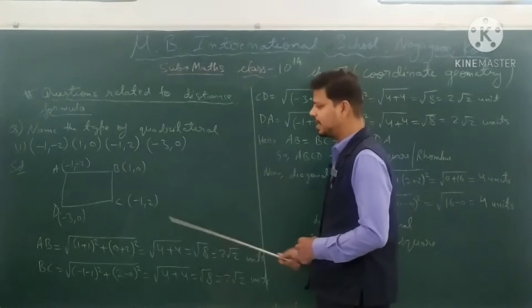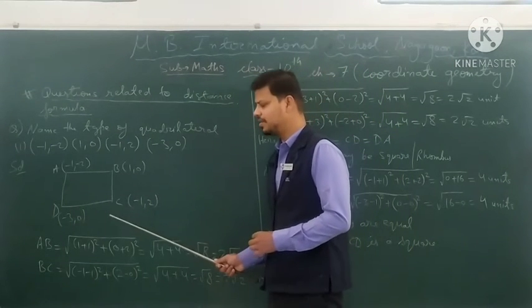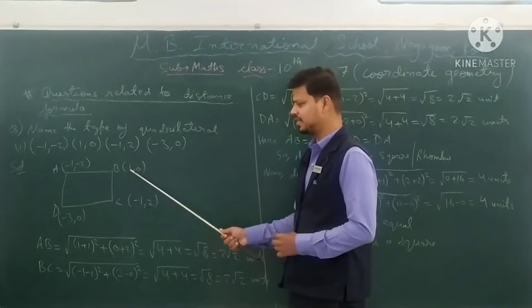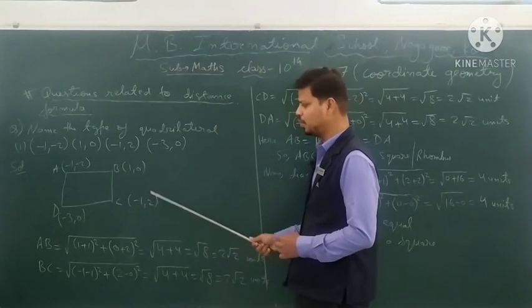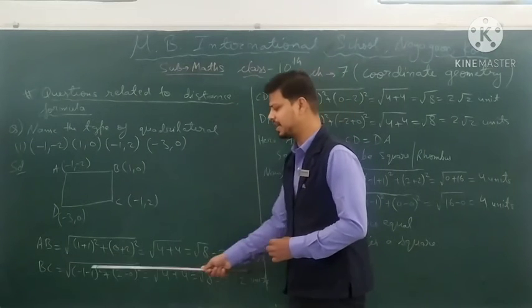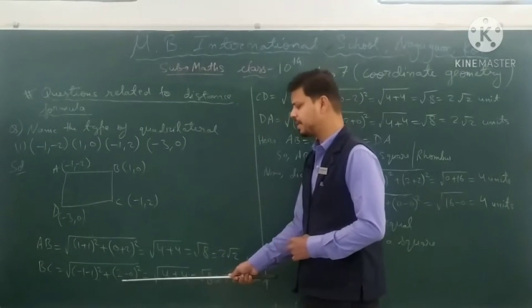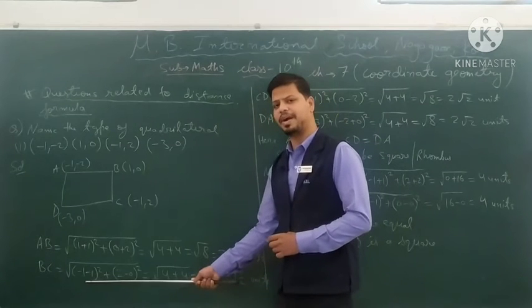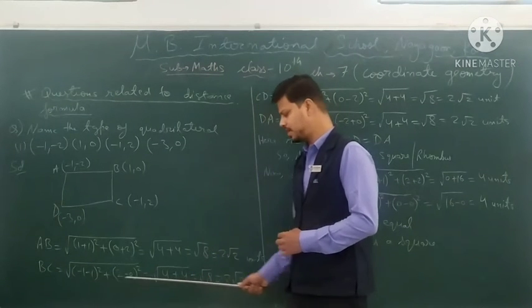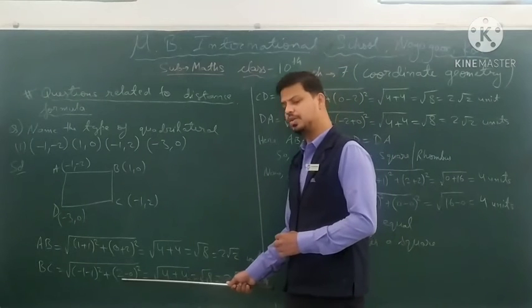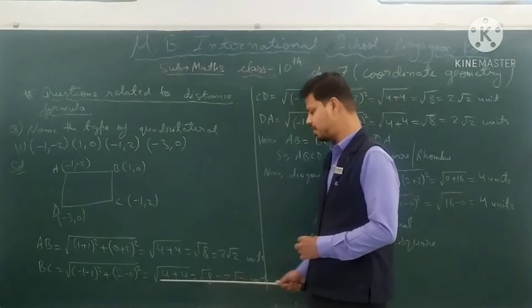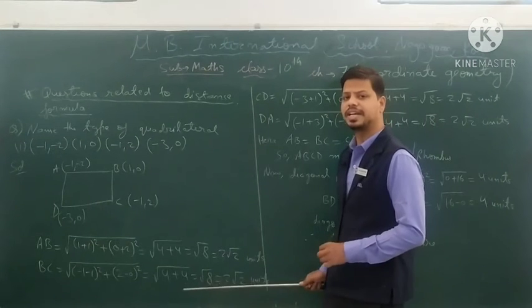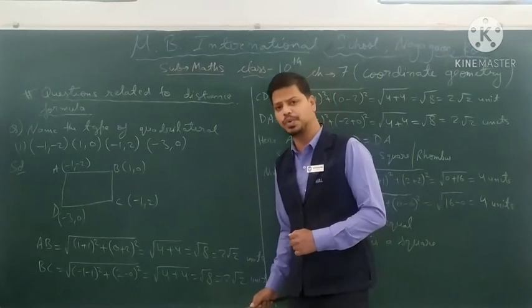Similarly, we calculate BC using the distance formula: √[(−1−1)² + (2−0)²] = √[(−2)² + (2)²] = √[4 + 4] = √8 = 2√2 units.